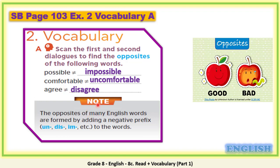Now let's look at this note. The opposites of many English words are formed by adding a negative prefix — un, dis, or im — to the word. For example: impossible uses the prefix im; uncomfortable uses un; and disagree uses dis.